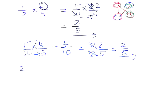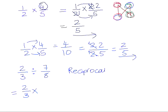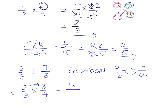When we divide fractions — for example 2 thirds divided by 7 eighths — we need to first change the divide into a multiply and multiply by the reciprocal fraction. Reciprocal means if you had a over b, the reciprocal is b over a: turning the fraction upside down, making the numerator the denominator and vice versa. So 7 eighths becomes 8 over 7. Since 2 and 7 share no common prime factors, and neither do 8 and 3, we just multiply numerators and denominators, giving 16 over 21.